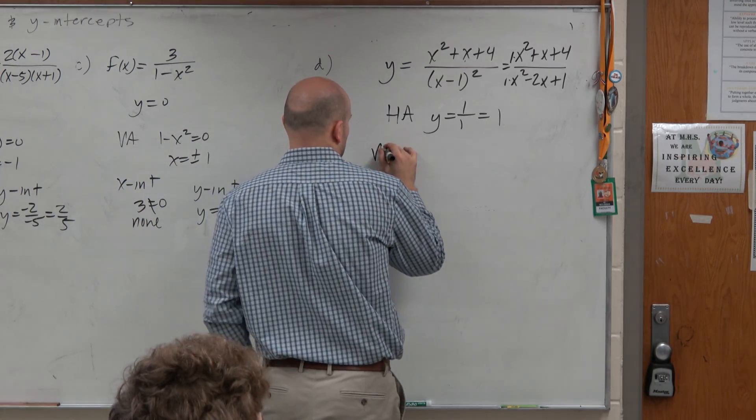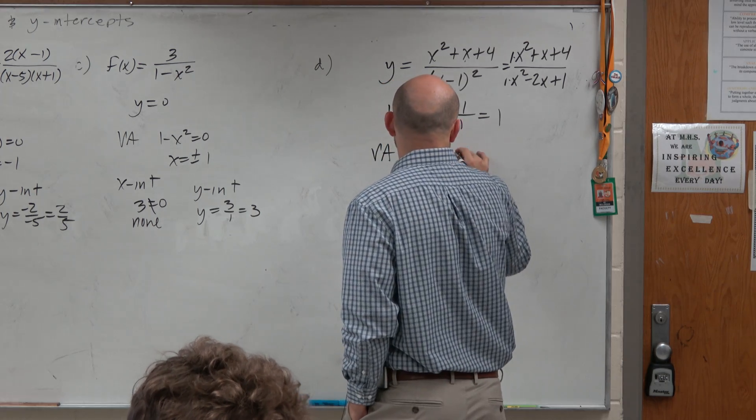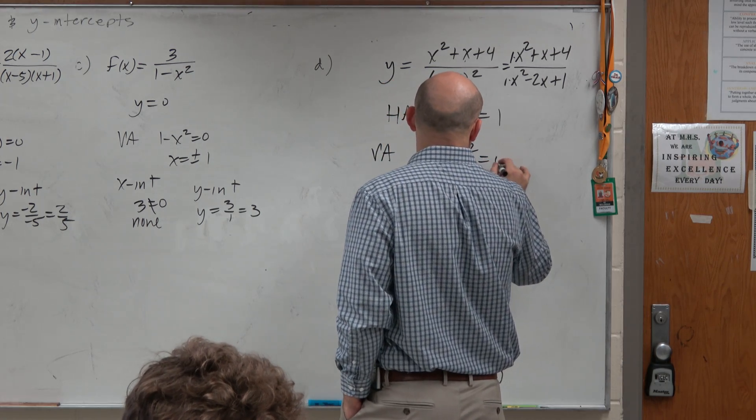Vertical asymptote. Vertical asymptote is, again, my denominator equal to 0. Now, again, I wanted to check for holes.